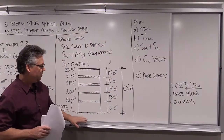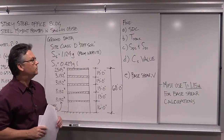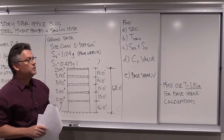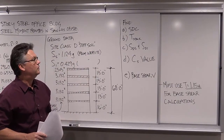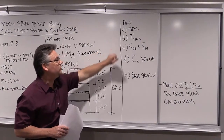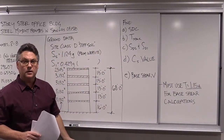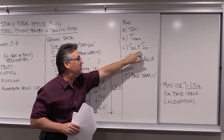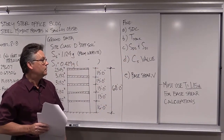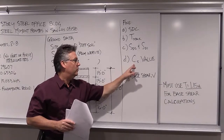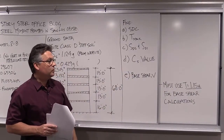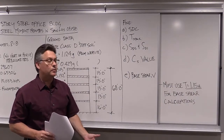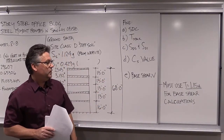I am asking you — and you will have a homework assignment very similar to this — to figure out what the seismic design category is for this building, what is the maximum period we are allowed to use to calculate the base shear, and then to calculate the SDS and SD1 values. We will then calculate the CS value — the coefficient that gets multiplied by the building weight to get the base shear — and then calculate the base shear itself.